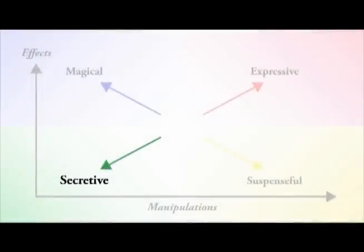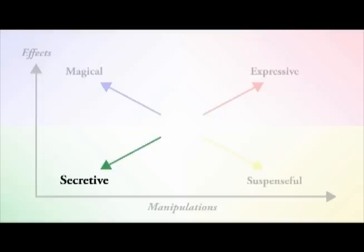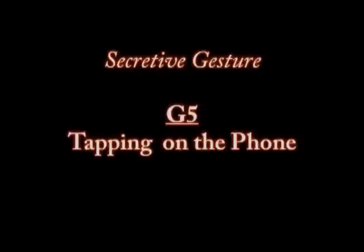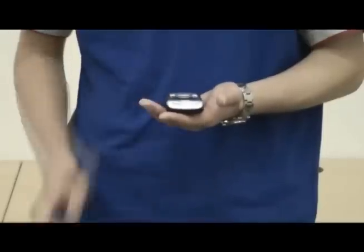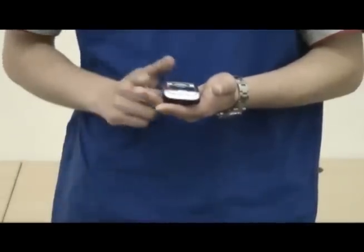Secretive gestures have both the manipulations and the effects hidden and therefore are hardly noticeable to the public. For example, the following Gestures 5 and 6. Here the user taps on the phone in order to operate it.